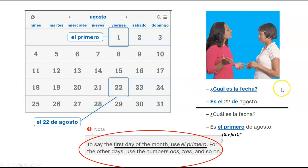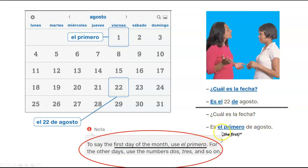¿Cuál es la fecha? What is today's date? Es el 22 de agosto — it is the 22nd of August. ¿Cuál es la fecha? What is the date? Es el primero de agosto — it is the first of August.